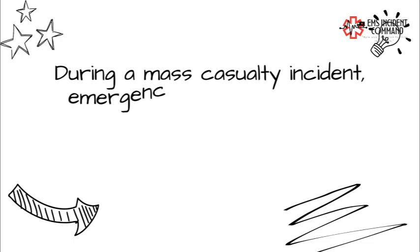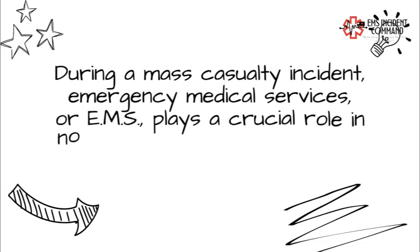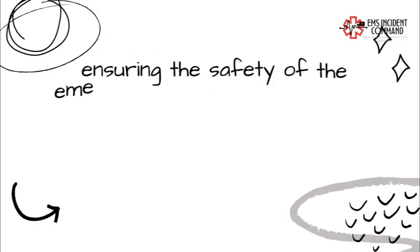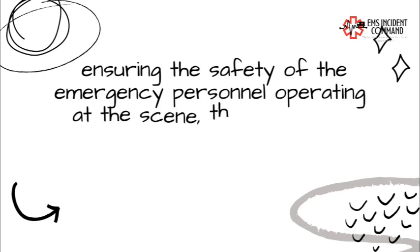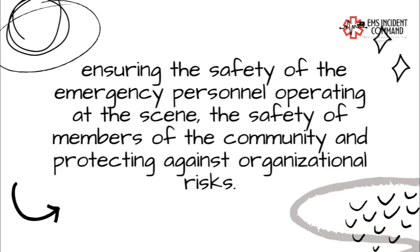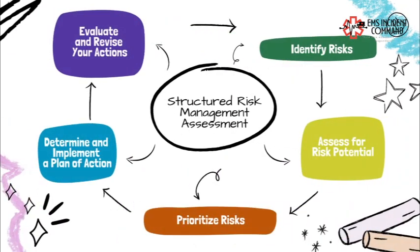During a mass casualty incident, Emergency Medical Services, or EMS, plays a crucial role in not only providing medical care to the injured, but also in ensuring the safety of the emergency personnel operating at the scene, the safety of members of the community, and protecting against organizational risks. The Federal Emergency Management Agency developed the NIMS National Incident Management System and identifies five steps as part of the structured risk management assessment in the Incident Command System.